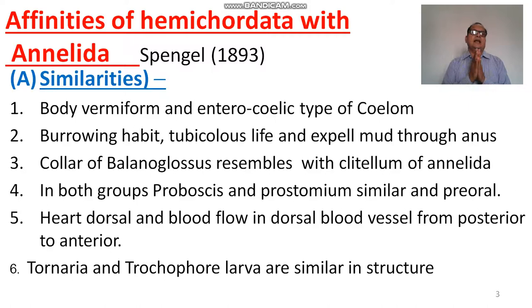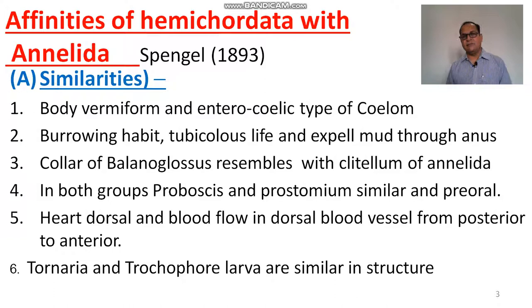Affinities of Hemichordata — first with Annelida. Spengel gave the affinities of Hemichordata with Annelida. Similarities: body vermiform and enterocoelic type of coelome in both groups; burrowing habit, tuberculous life, and expel mud through anus in both groups.